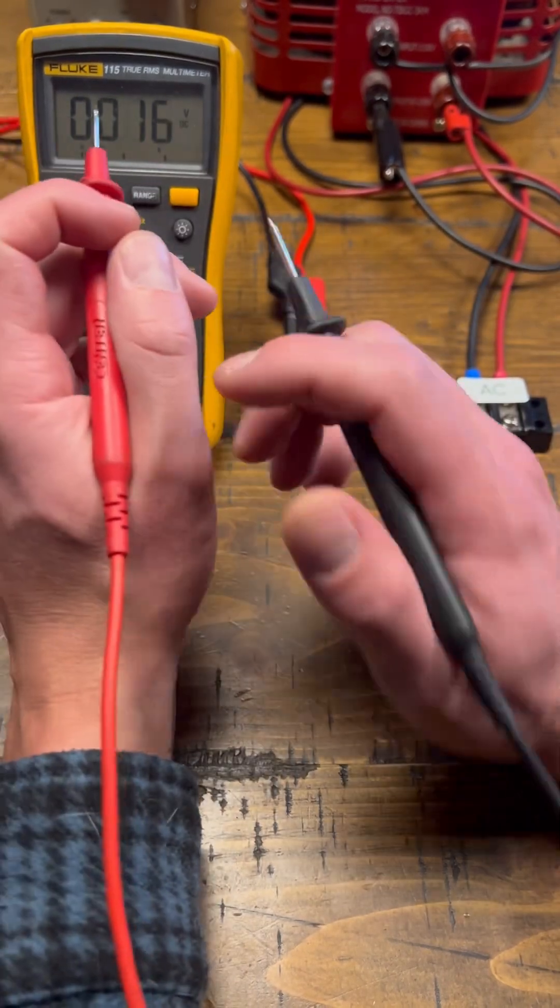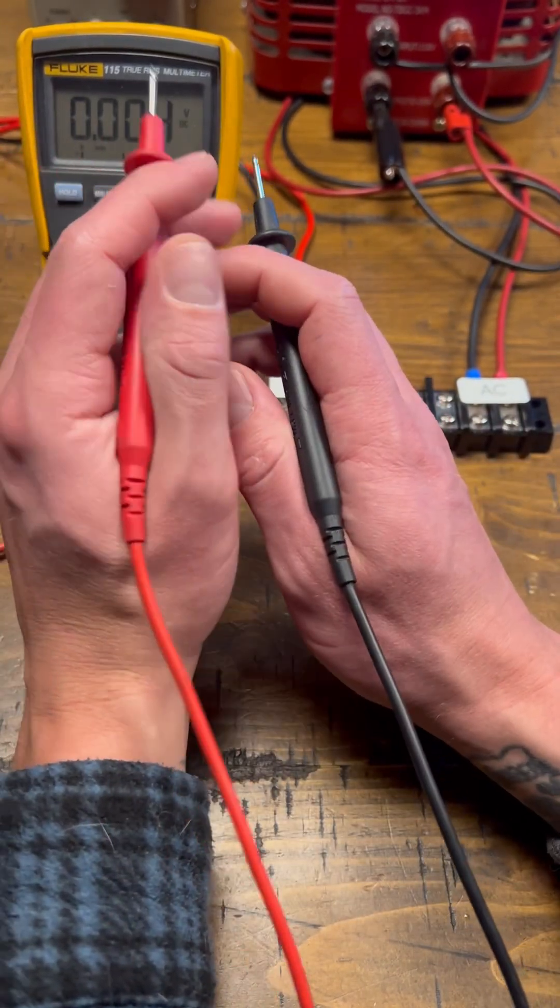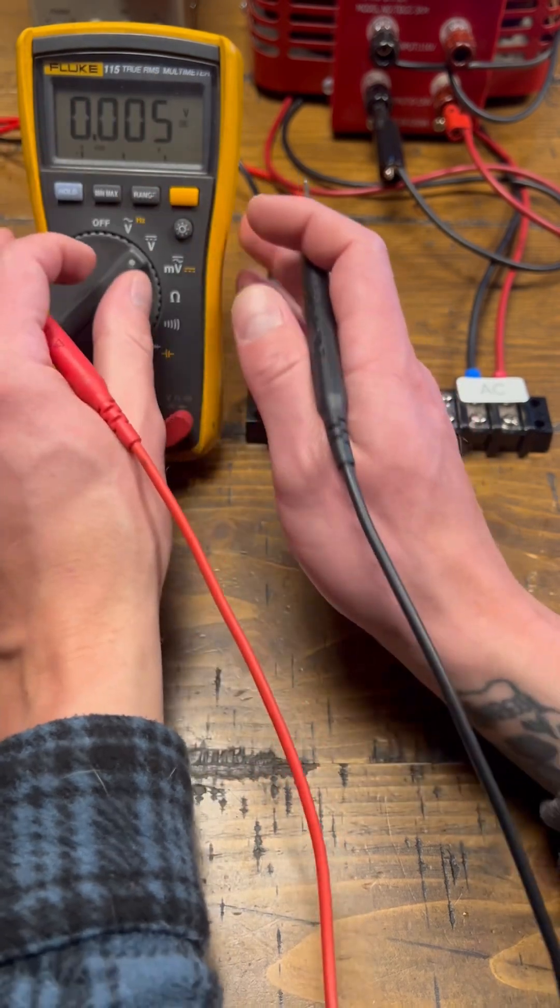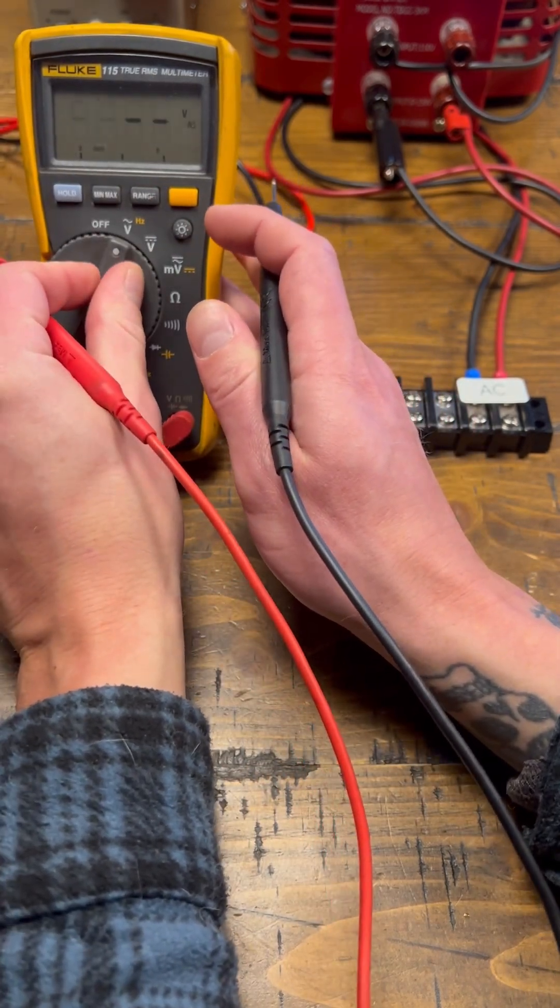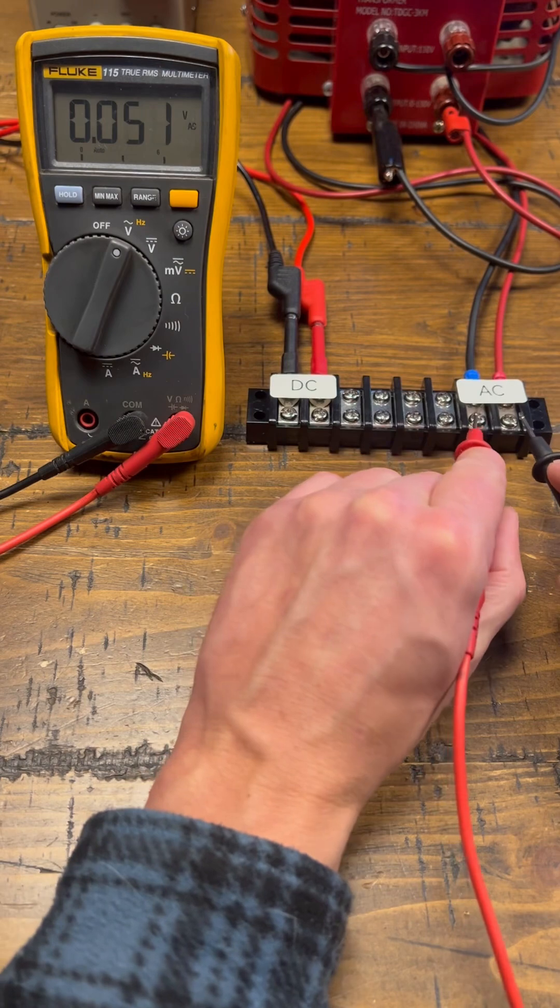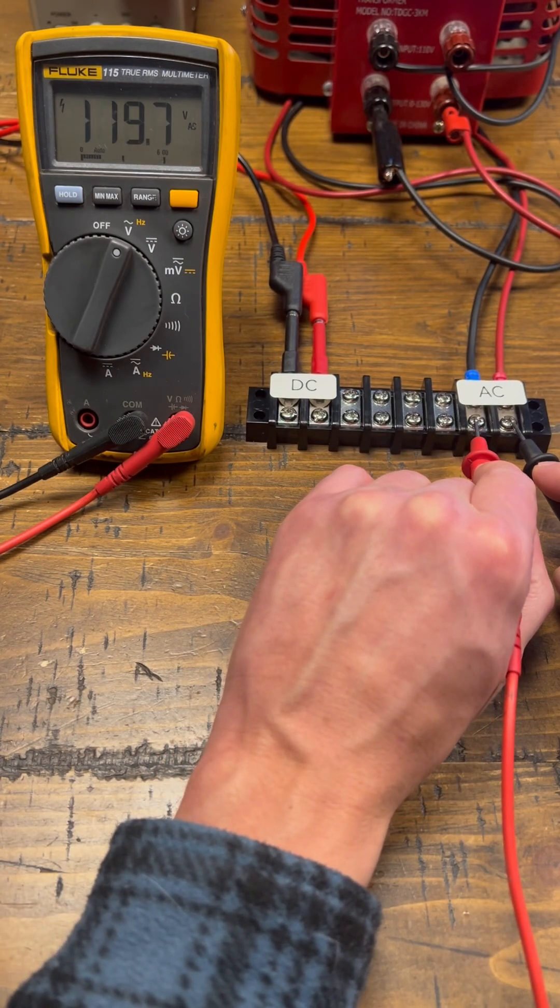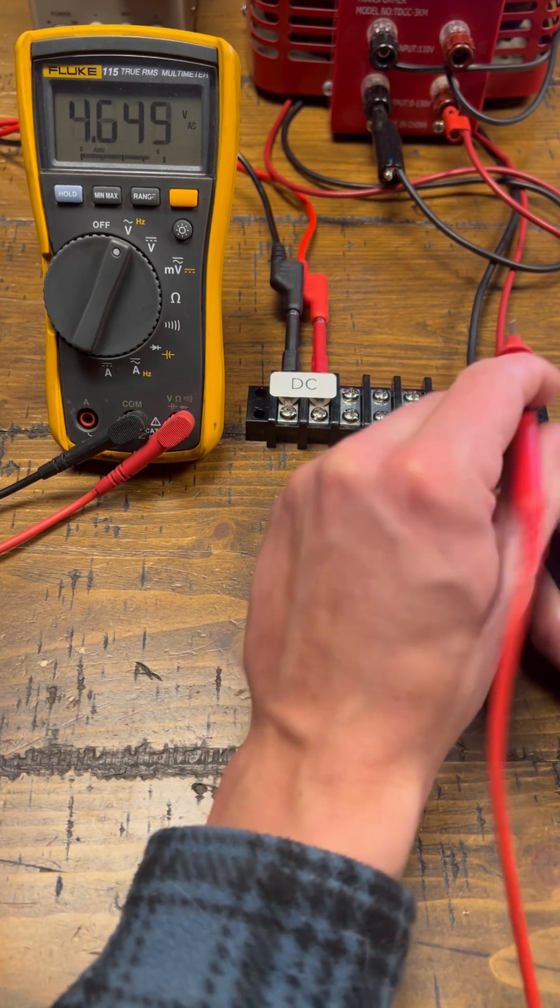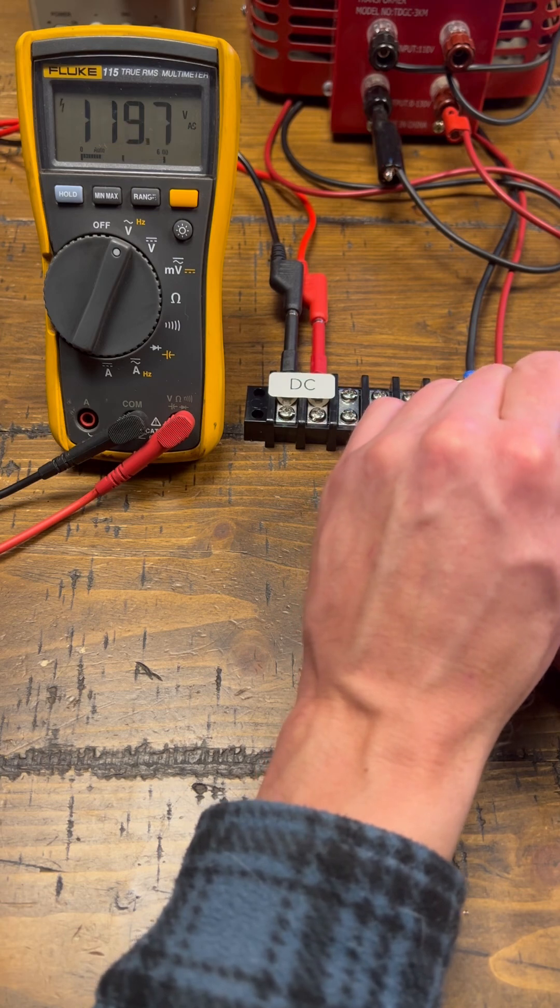Polarity is like our plus or minus, or our red or black. So I'm going to set my meter to volts AC, and you can see no matter how I do my test leads for my AC circuit, my voltage is always going to read the same.